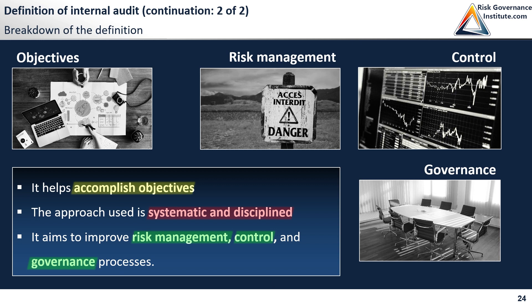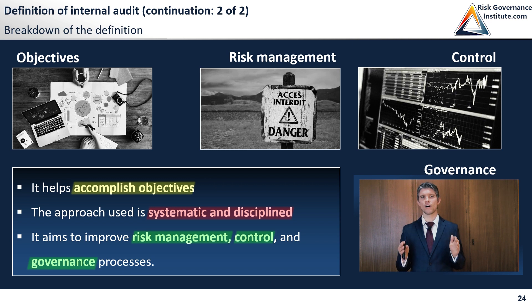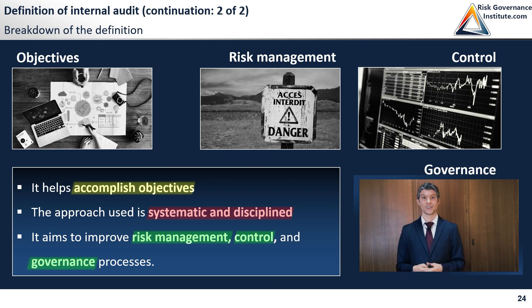It's very important that you see that by definition we use a systematic and disciplined approach. That means, quite frankly for the IIA, we're using their method — and you're going to really understand their method in parts one and two of the CIA. All of that to help the organization accomplish its objectives. I just want you to pause for a second and think about why internal audit is special. Because, okay, we verify operations, risk management, control, governance, but other functions can do that too.